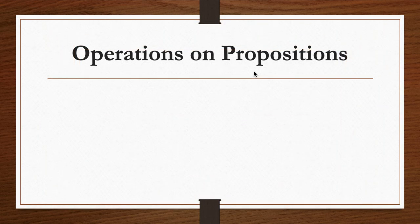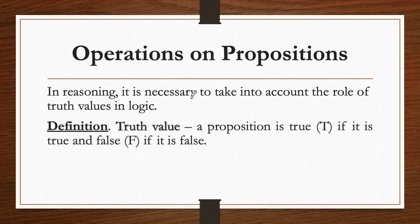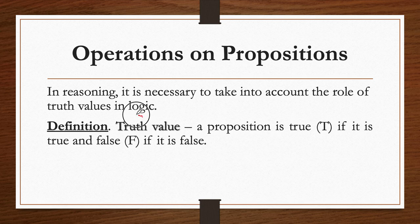So what is a truth table? In reasoning, in particular in logic, it is necessary to take into account the role of truth values in logic. A truth value of a proposition is true if it is true, and the truth value of a proposition is false if it is false. Recall that a proposition is a declarative statement that is either true or false. So the truth value is the truthness or the falseness of that proposition.